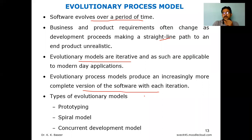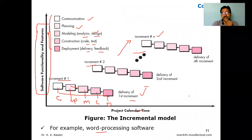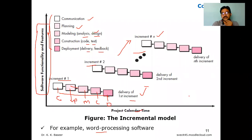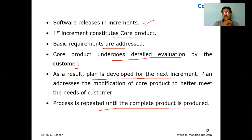Different types of evolutionary models are available. The first is prototyping, the second is the spiral model, and the third is the concurrent development model. Today's class covered the incremental process model — how it works with respect to project calendar time, software functionality and features, and how each increment is generated.